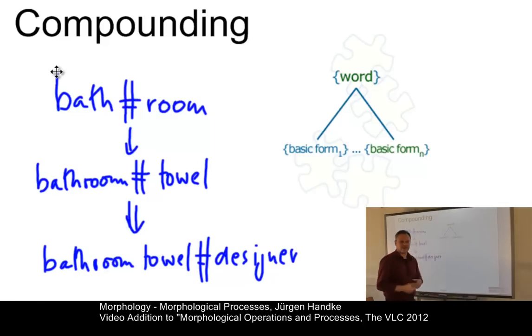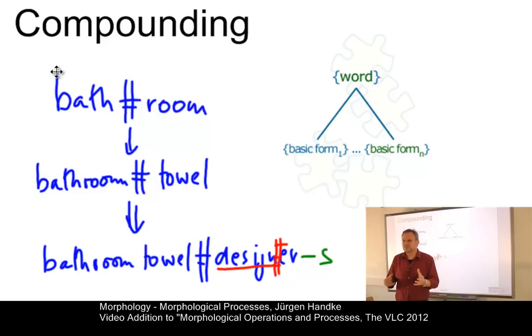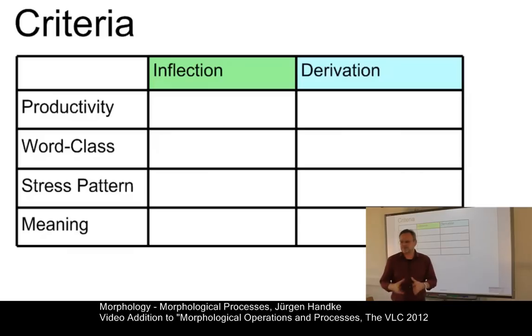And here you see something very interesting. Compounds, of course, can undergo further morphological processes. For example, here we have design plus ER, a derivative, and we can even add an inflectional morph at the end to turn it into bathroom towel designers. Now, since formally it is easy to separate compounds from inflectional processes and derivational processes, compounds involve at least two base forms, we have to look at derivation and inflection in more detail and have to find out some criteria which keep these particular processes apart.